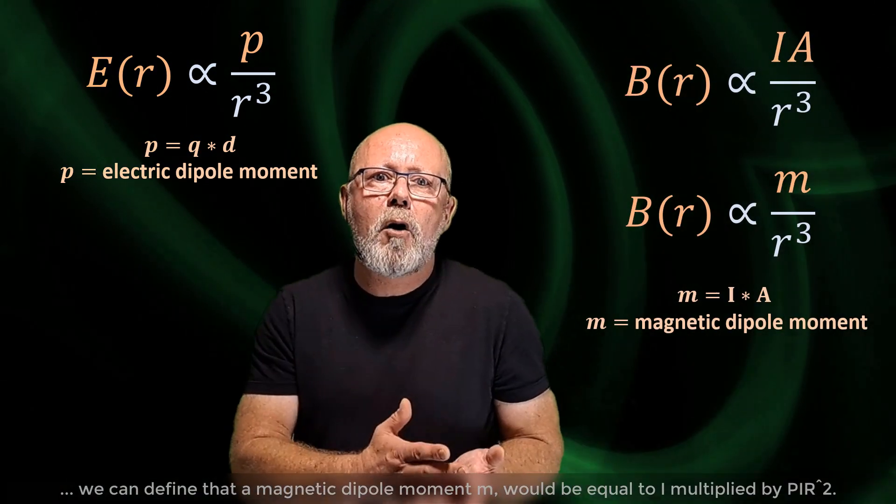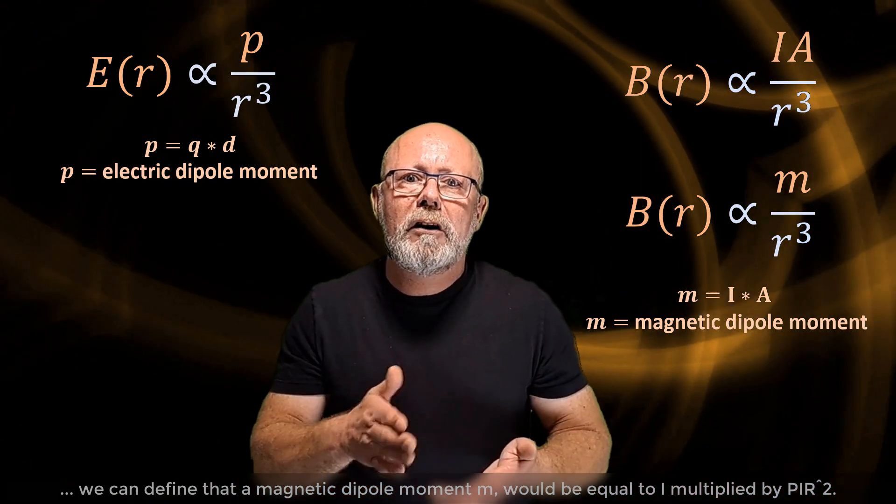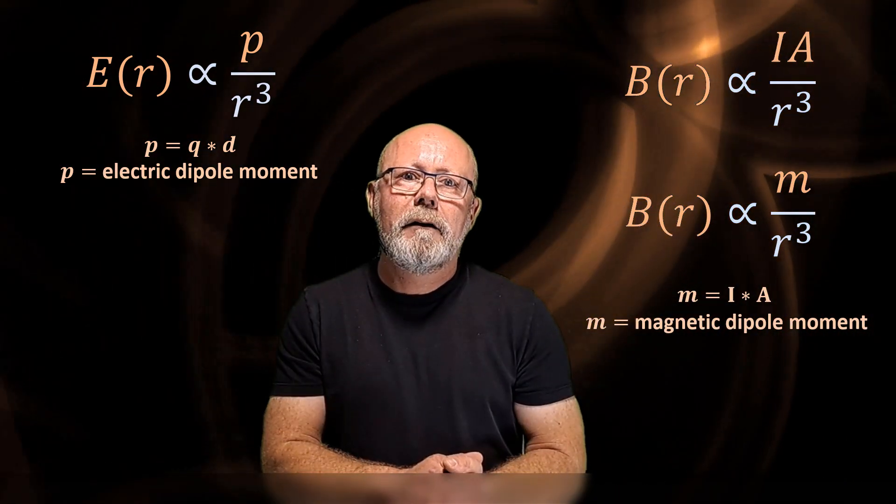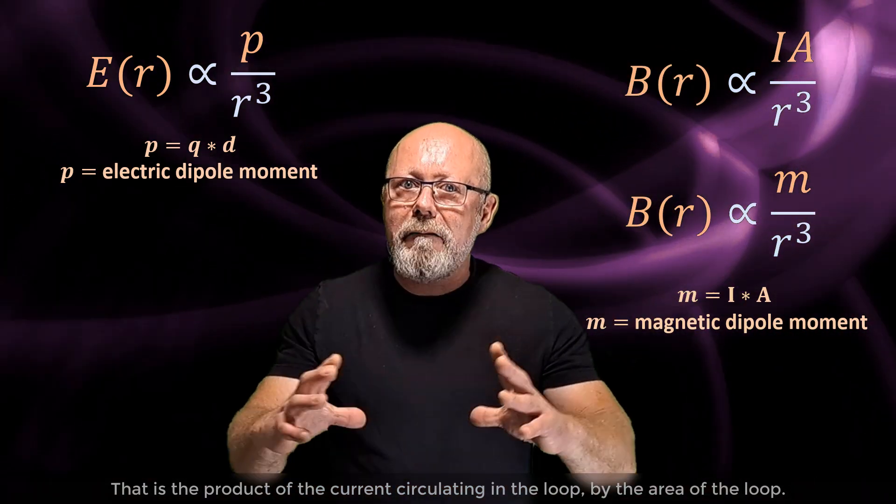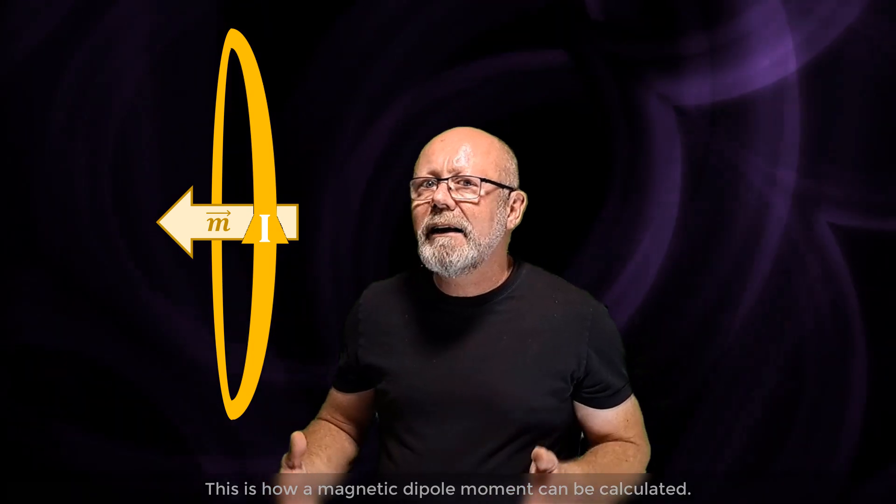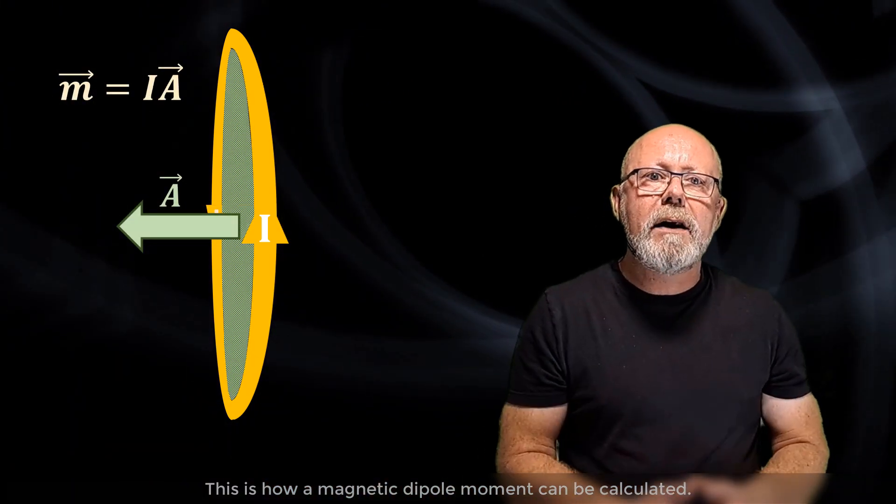By making an analogy with the expression from the electric field strength generated by an electric dipole, we can define that a magnetic dipole moment, m, would be equal to i multiplied by pi r squared. That is the product of the current circulating in the loop by the area of the loop. This is how a magnetic dipole moment can be calculated.